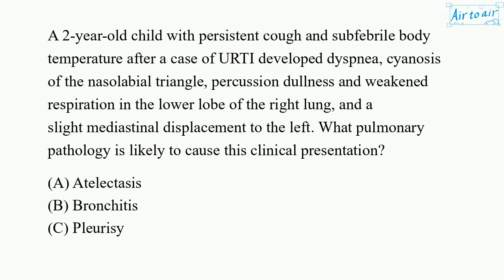A 2-year-old child with persistent cough and subfebrile body temperature after a case of URTI develops dyspnea, cyanosis of the nasolabial triangle, percussion dullness and weakened respiration in the lower lobe of the right lung, and a slight mediastinal displacement to the left. What pulmonary pathology is likely to cause this clinical presentation?